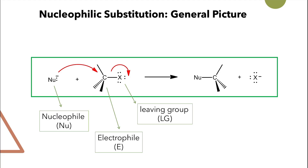Nucleophilic substitution reaction, as the name implies, is a kind of substitution reaction where you replace one group from your compound with another group. And because it's called nucleophilic, the group that is replaced and the group that is newly formed are both nucleophiles. So the species that attacks the compound to form a new one must be a nucleophile.